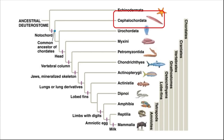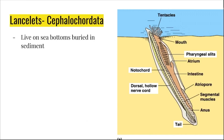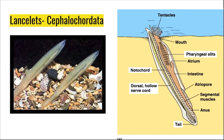The first group of chordates we'll look at are the cephalochordates. The cephalochordates include the lancelets. Lancelets live on the sea floor, buried in the sediment. They filter feed by exposing their tentacles to the passing current. Here you can see a photo of lancelets buried in the substrate.